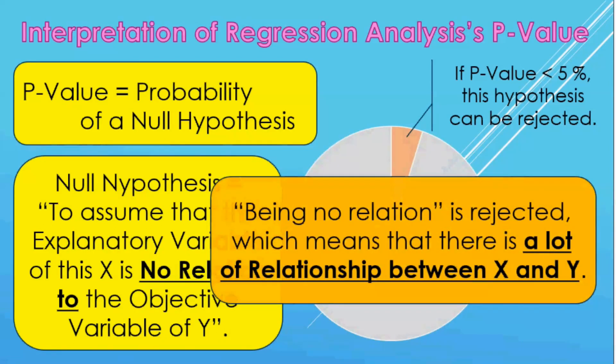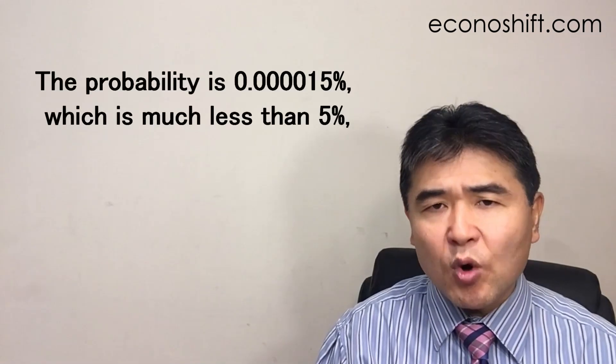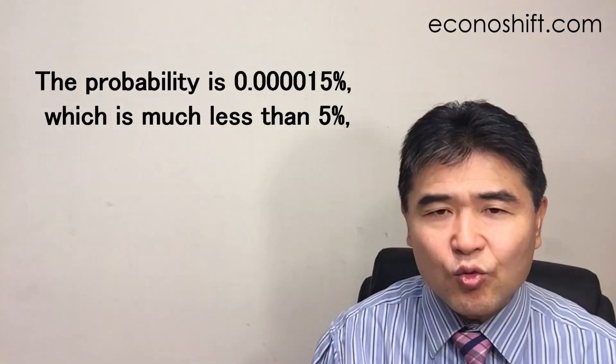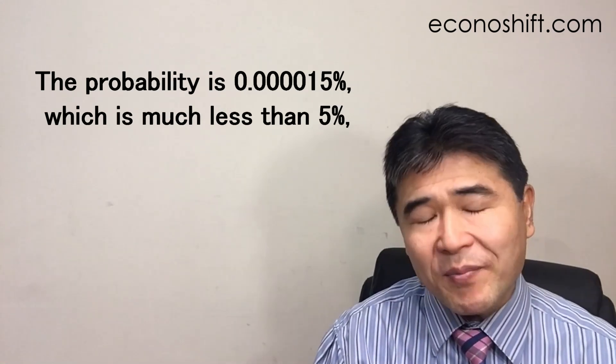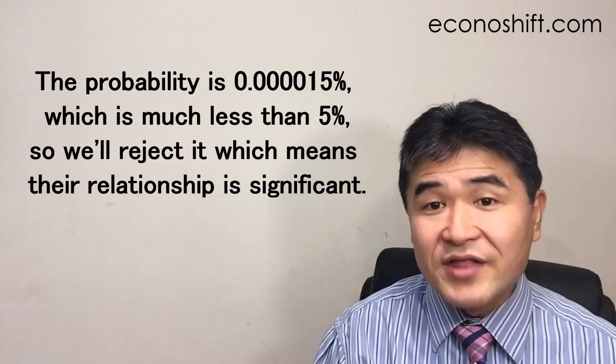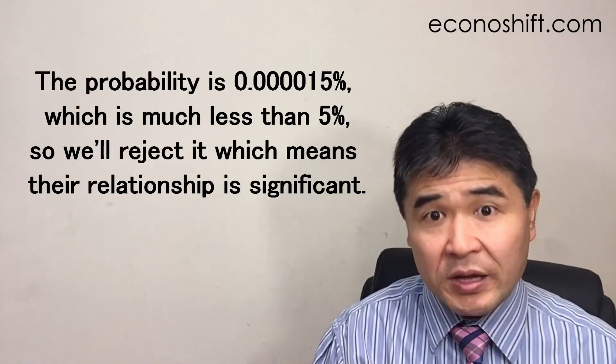In other words, being no relation is rejected, which means that there is a lot of relationship between x and y. In our case, the probability is 0.000015%, which is much less than 5%, so we reject it. Which means their relationship is significant.